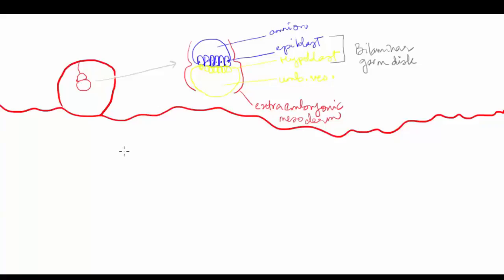This is what we see at the beginning of the third week of development, and the structures that should concern us have been zoomed in. You can see the extra-embryonic mesoderm, the amnion and the epiblast, the umbilical vesicle and the hypoblast. The epiblast and hypoblast together constitute the bilaminar germ disc. Fast forward to the end of the third week and the bilaminar germ disc will have turned into a trilaminar germ disc by a process known as gastrulation.